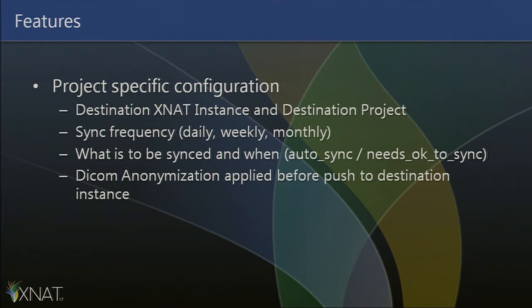What kind of configurations can you do? These are project-specific configurations, which means a project can define where the destination XNAT instance is and which destination project within that instance the data should go to. You can define a sync frequency — daily, weekly, or monthly. You can also define what gets to be synced, giving you control over various entities within your project.